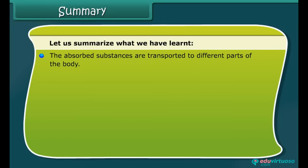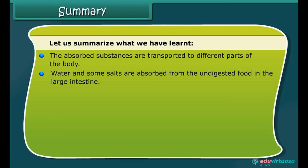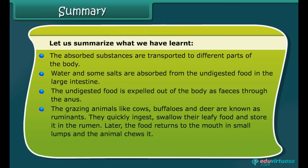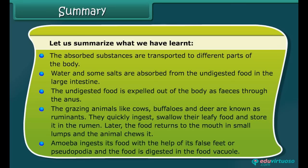The absorbed substances are transported to different parts of the body. Water and some salts are absorbed from undigested food in the large intestine, and undigested food is expelled as feces through the anus. Grazing animals like cows, buffaloes, and deer are known as ruminants — they quickly swallow leafy food, store it in the rumen, and later chew the cud. Amoeba ingests food using pseudopodia, and digestion occurs in the food vacuole.